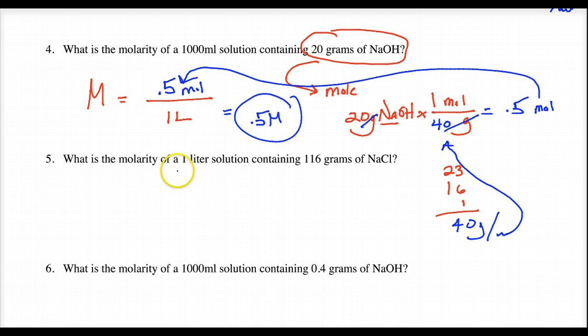What is the molarity of a 1 liter solution containing 116 grams of NaCl? Same kind of problem. So molarity, again, is moles over liters. This time, I know that the formula mass, because I went to the formula mass party, is 58 grams per mole. How did I do that? I've seen this so many times, but 23 plus 35 is 58. So I get 58 grams.